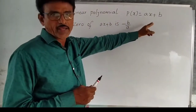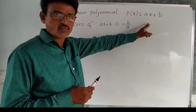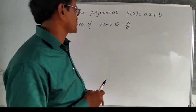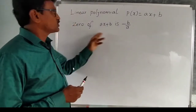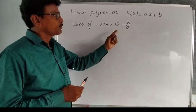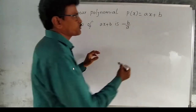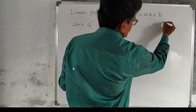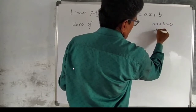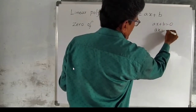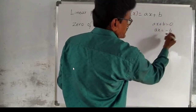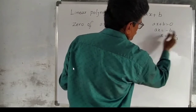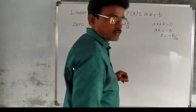The general form of a linear polynomial is p(x) = ax + b. This is a first degree polynomial in variable x, where a and b are real coefficients. The zero of ax + b is minus b by a. We get this because ax + b = 0 gives ax = minus b, so x = minus b by a.